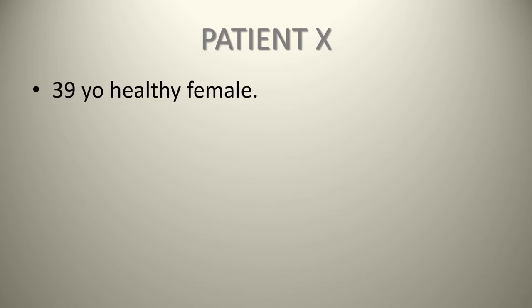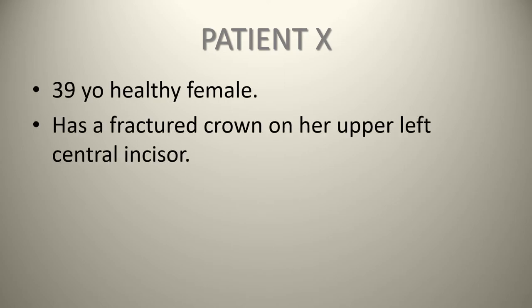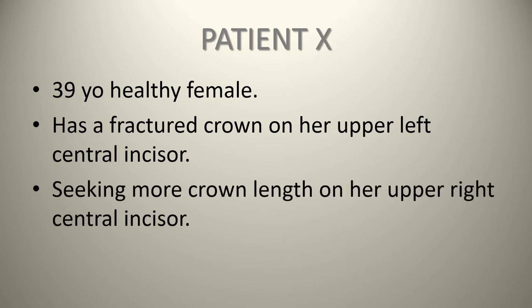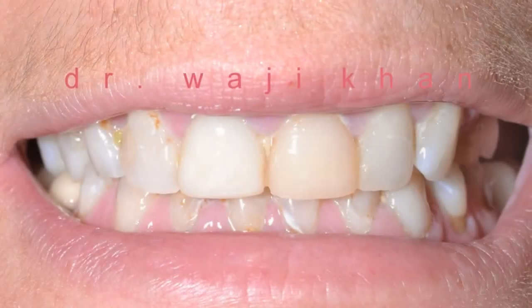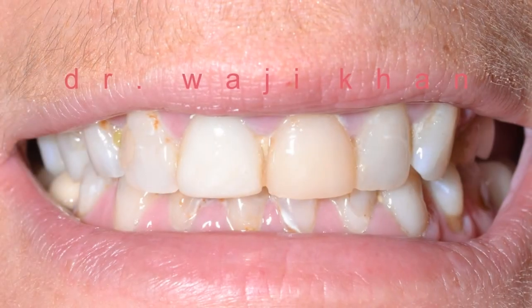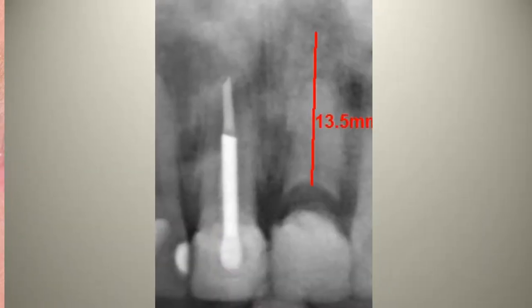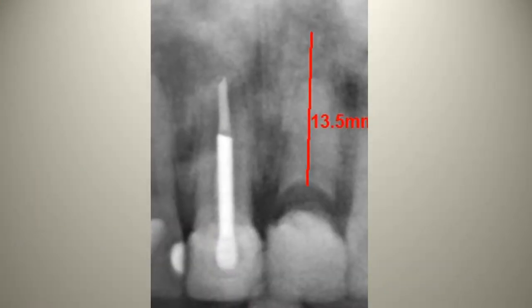Today's case involves a 39-year-old healthy female who presents with a fractured crown on her upper left central incisor. She's also seeking more crown length on the upper right central incisor. In the photograph you can see the presentation, and the radiograph shows an obvious problem with that upper left central incisor in the form of caries.